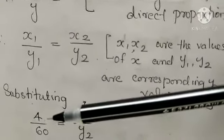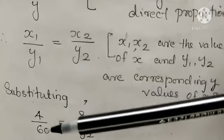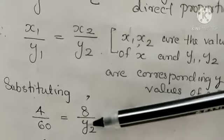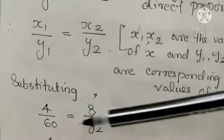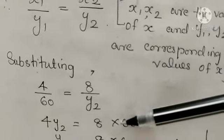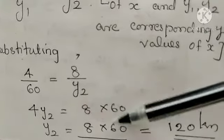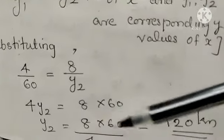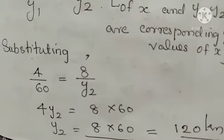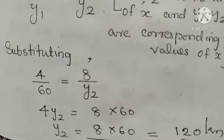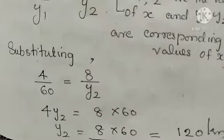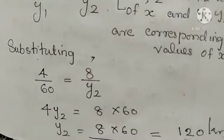Substituting the given values, we can write 4 by 60 is equal to 8 by y2. Cross multiplication, we can write 4y2 is equal to 8 into 60. Therefore, y2 is equal to 120 kilometers. So for 8 liters of petrol, 120 kilometers can be traveled. Understood the way we have to calculate? Using the condition of direct proportion.